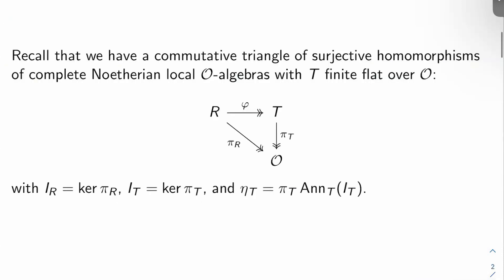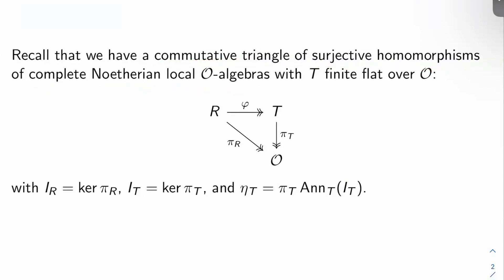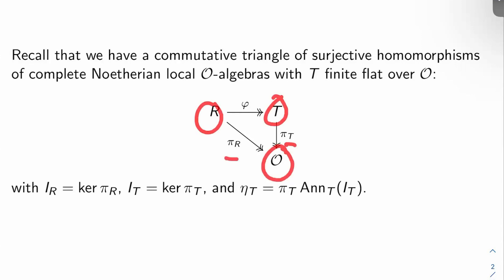First, let's recall the setup. We have a commutative triangle of surjective homomorphisms of complete Noetherian local O-algebras, with T finite flat over O. The map from R to T is a surjective map that we'll call phi. And we have structural maps from R and T respectively to O, called pi sub R and pi sub T, which are also surjective. This diagram commutes.